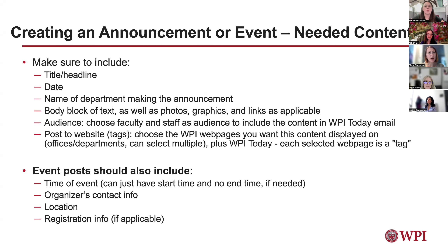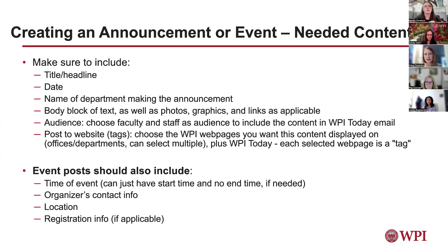When you're creating an announcement or event, you need to fill out the title and headline, the date of the event or announcement, the name of the department making the announcement, any related content in the body block, photos, graphics, and links. You can also choose your audience, and if the event is led by a specific faculty or staff member, you can tag them. Then you choose the post to websites tags — this is where you select which WPI web pages you want the content displayed on.